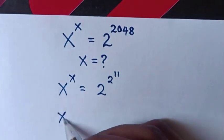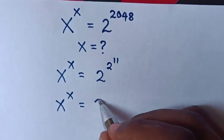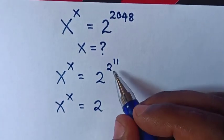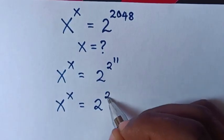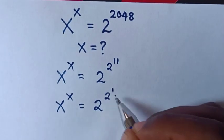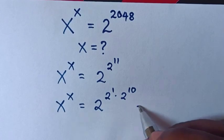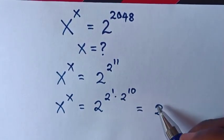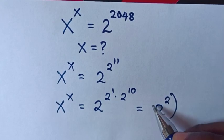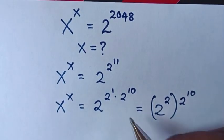Then here x^x = 2^(2^11). We apply the exponent rule, so it will be 2 power of (1 times 2^10). This equals 2^2 raised to the power of 2^10, giving the form 2^2 bracket 2^10.